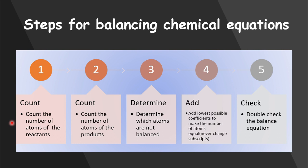Now let's look at how to balance a chemical equation in five easy steps. Our first step is to count the number of atoms of the reactants. Our second step is to count the number of atoms of the products. As the third step, we must determine which atoms are not balanced. Our fourth step is to add the lowest possible coefficient to make the number of atoms equal on both sides of the reaction arrow. As the final step, we must double-check our balanced equation.